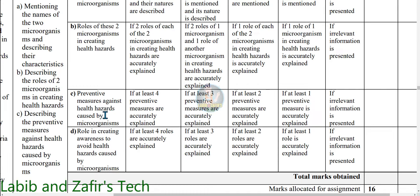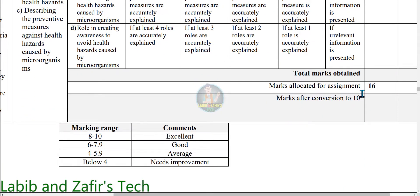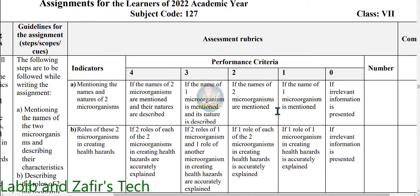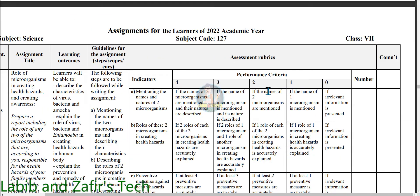For question C — preventive measures against health hazards caused by microorganisms — for four marks, if four measures are accurately explained. For three marks, if three measures are explained. For two marks, two measures. For one mark, one measure. This is your assessment rubrics, and this is the Science assessment.